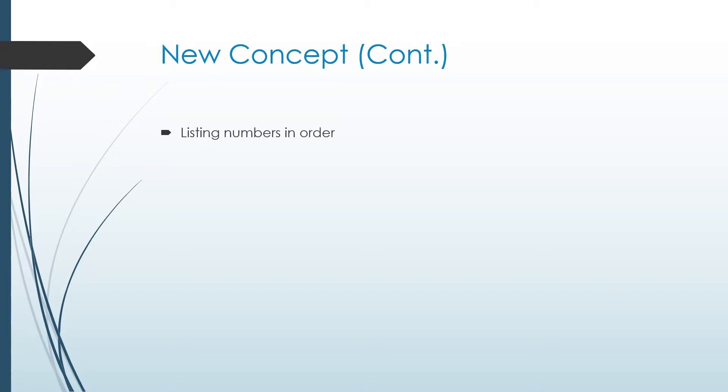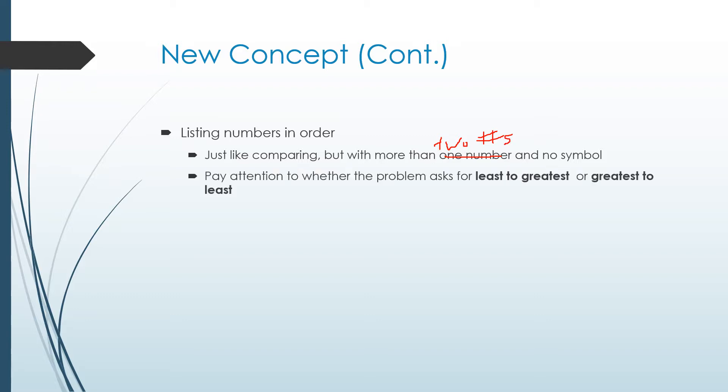Sometimes we'll be asked to list numbers in order. It's just like comparing, but we're going to use more than two numbers. Make sure in the problem you pay attention to whether it's asking you to go least to greatest or greatest to least. A lot of times they're going to have you do three numbers that you're putting in order.